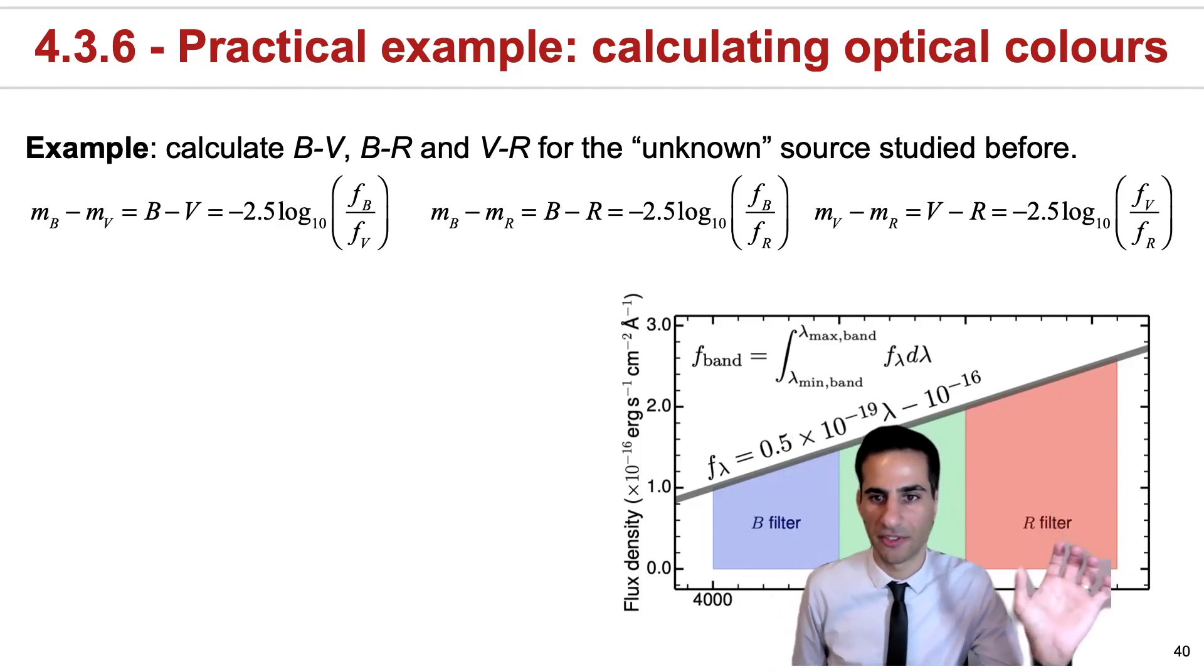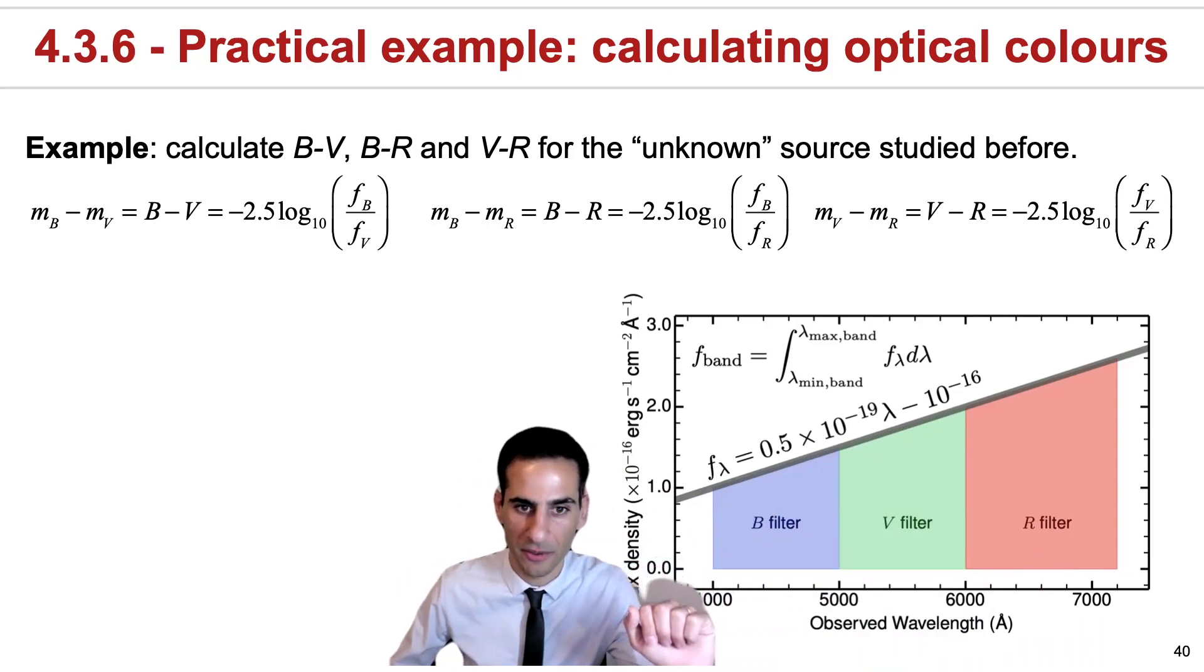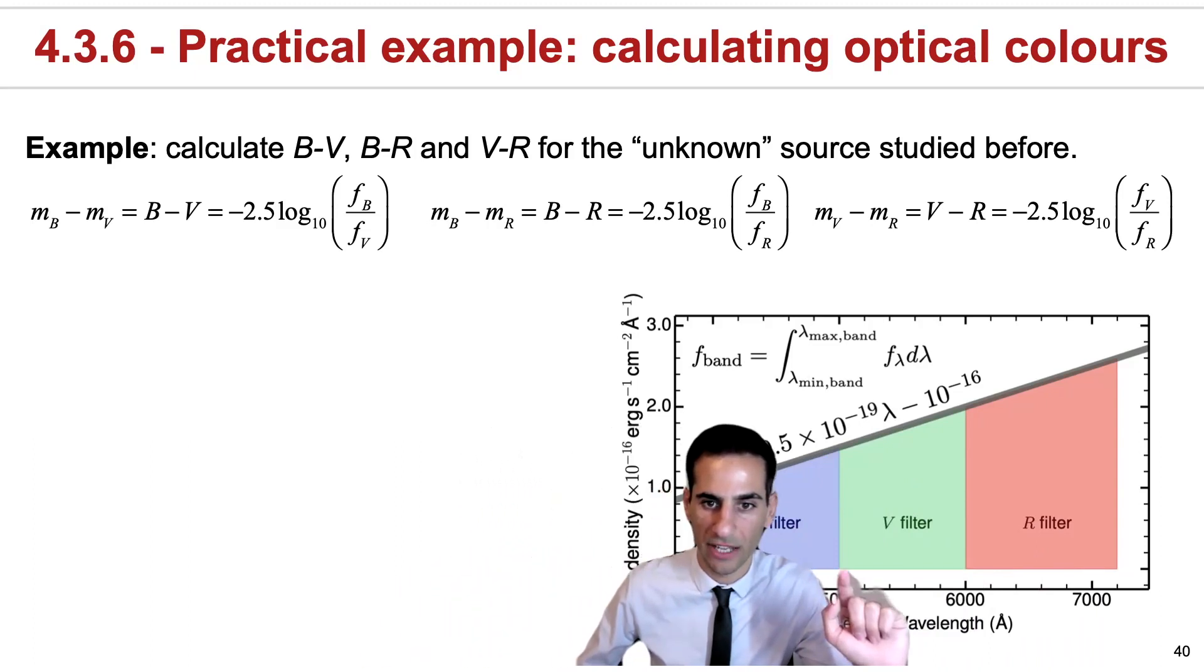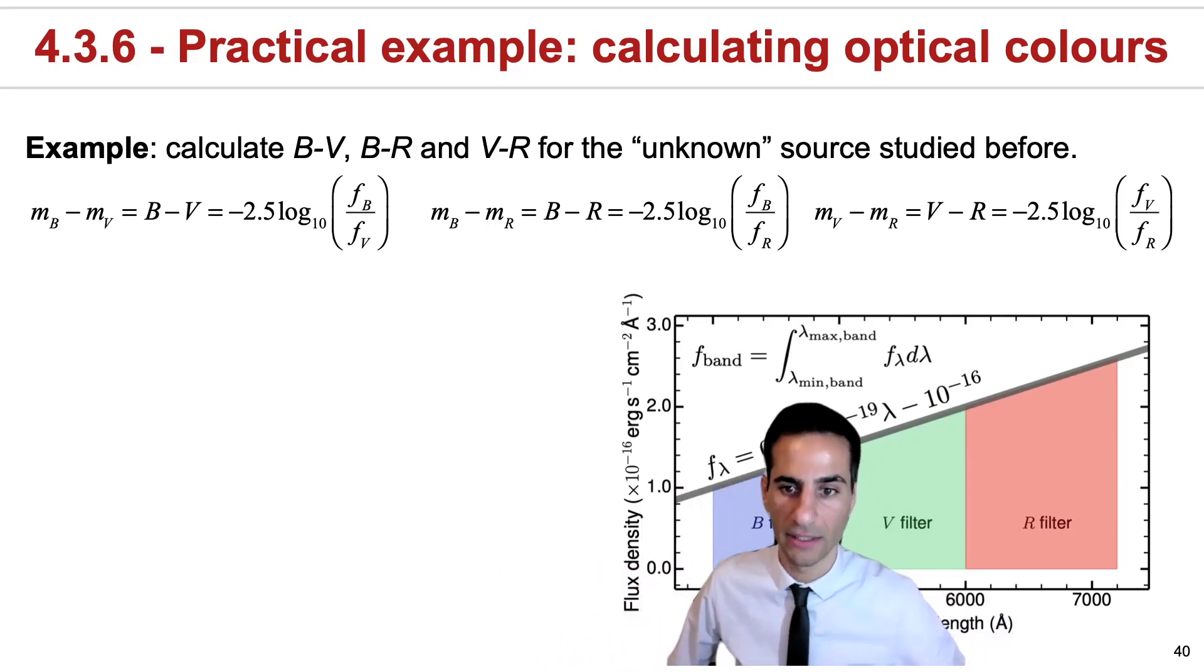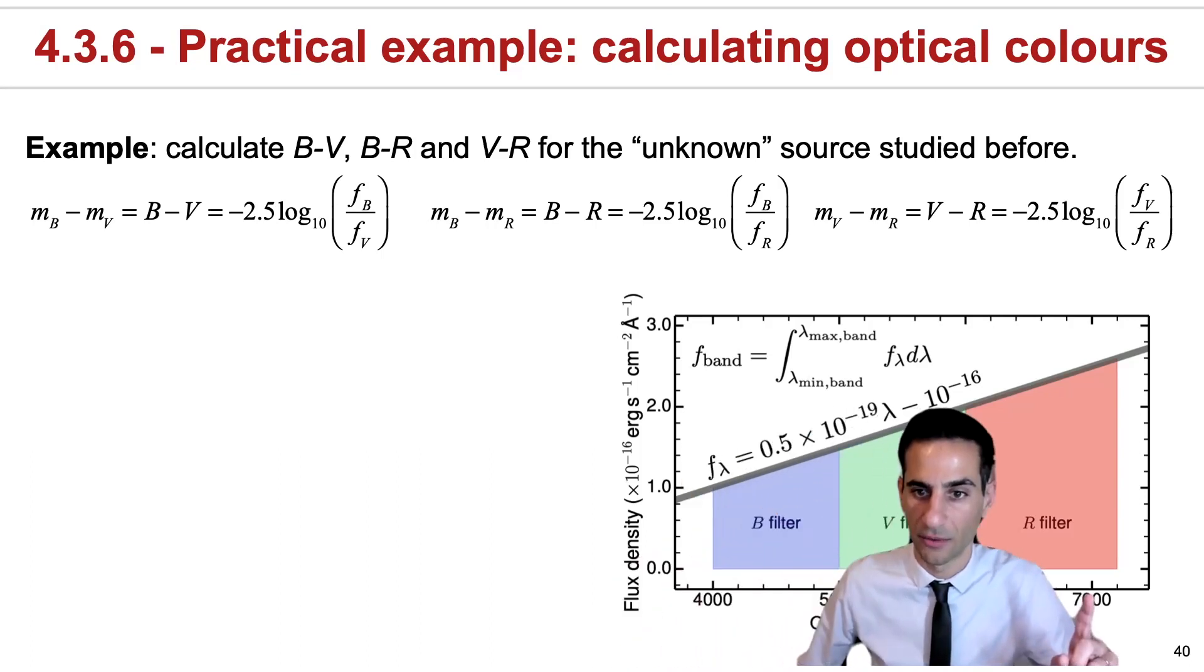They're defined so it's very simple to integrate. The B band filter goes from 4,000 to 5,000 angstroms. The V band filter goes to 6,000, and the R band filter goes from 6,000 to 7,000.